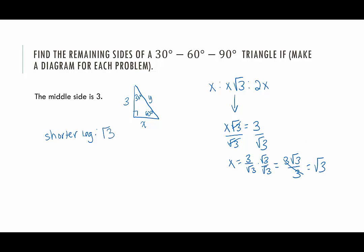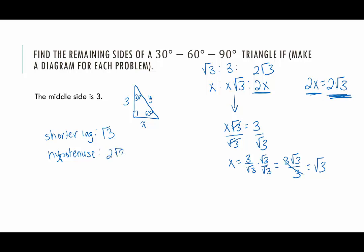So we have the square root of 3 for the short leg and 3 for the longer leg. To find the hypotenuse, I'll be smart and use the short side — the longer side is double the short side. So 2x equals 2 times the square root of 3, which is 2 radical 3. The hypotenuse is 2 radical 3 — it's double that smallest leg. These have been examples of finding remaining sides when we're given one side of a 30-60-90 right triangle. Thank you for stopping by.